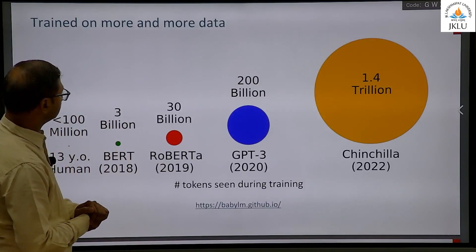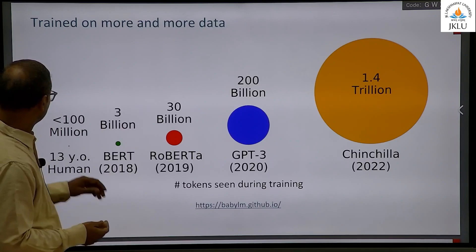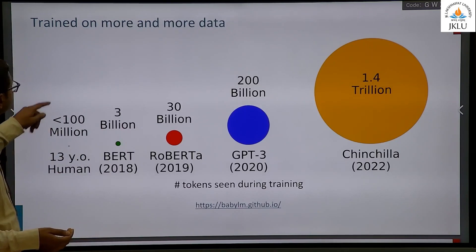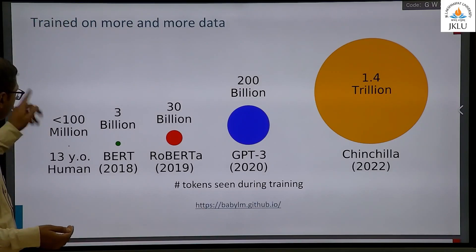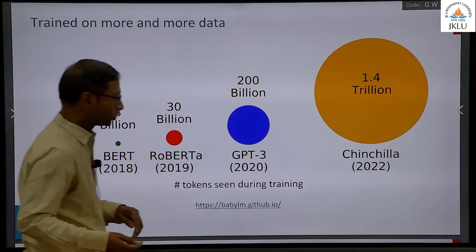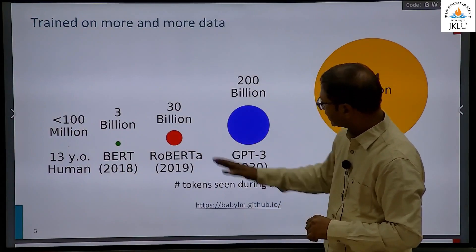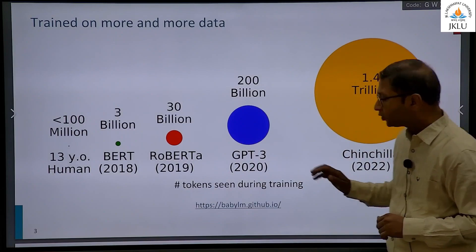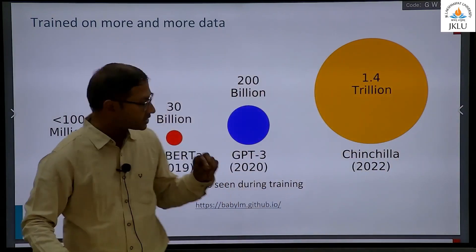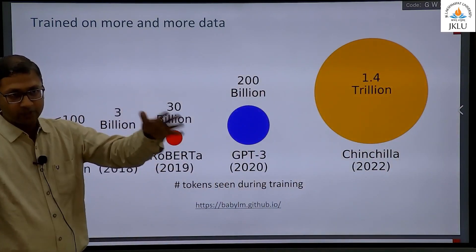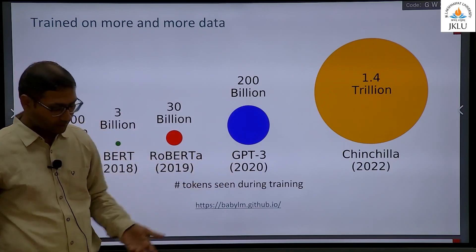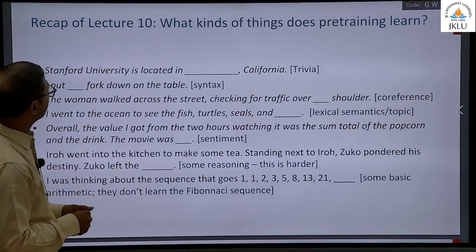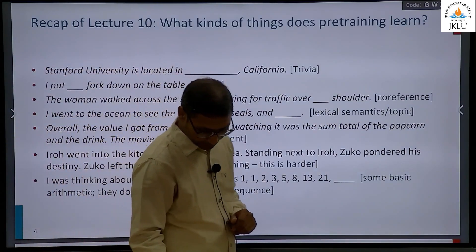A 13 year old human is trained on maybe less than 100 million tokens, then BERT on 3 billion, then 30 billion, 200 billion, 1.4 trillion. You can go and have a look at any of these architectures and you will be able to understand what it actually entails. A recap of whatever pre-training is done on.